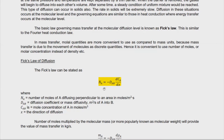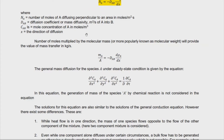Fick's law of diffusion is stated as: N_A equals negative D_AB times dC_A/dx. Here N_A is the rate of diffusion, D_AB is the mass diffusivity of component A through B, dC_A is the difference in concentration of A, and dx is the direction of diffusion — typically the length of the membrane or the element being considered.